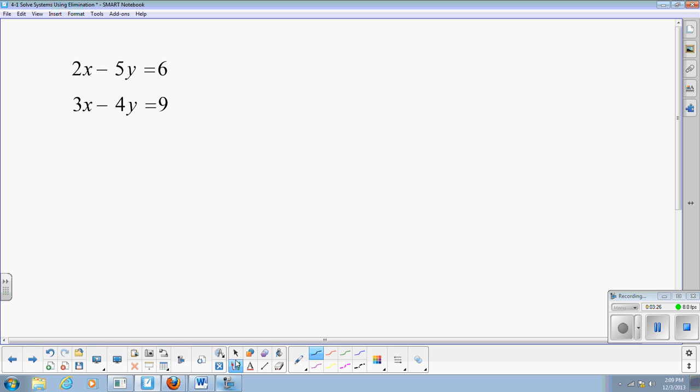So looking at this system, we want to, again, create opposites. Sometimes the opposites are already there like they were in the last one. But now in this one, 2x and 3x, they are different, and they are both positive. Here I have a minus 5y and a minus 4y. Numbers are different. Signs are the same. So what do I do then to create opposites on a system like this? I'm going to actually do some multiplying on both equations. I'm going to take and put parentheses around both equations.